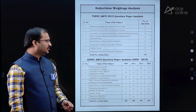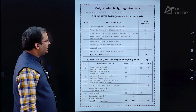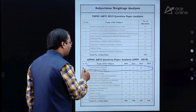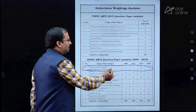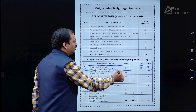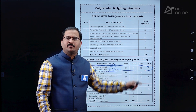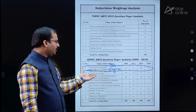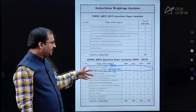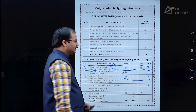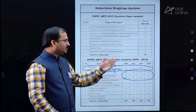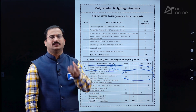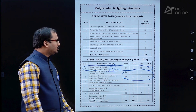For the APPSC AMVI paper, one important observation is that Thermal Engineering and Automobile Power Plants — which covers IC engines — had the majority of questions. Automobile Chassis Body and Transmission System, and Automobile Servicing, also had very good weightage in the examinations held in 2009, 2012, 2013, and 2019. Remaining subjects like Basic Hydraulics and Machine Design had some weightage, and the full weightage analysis is shown clearly in the book.